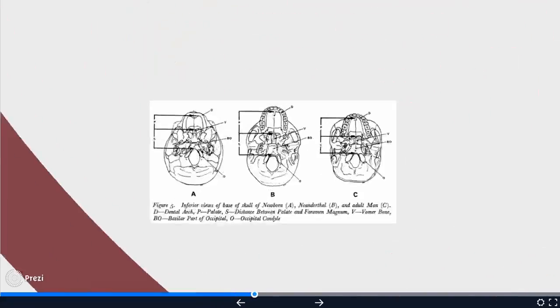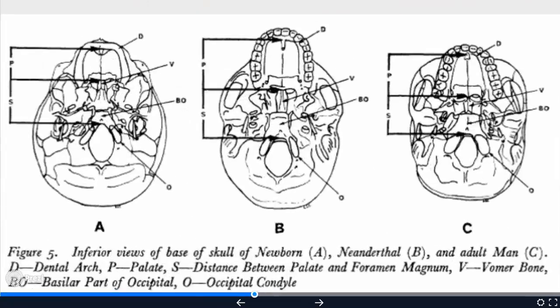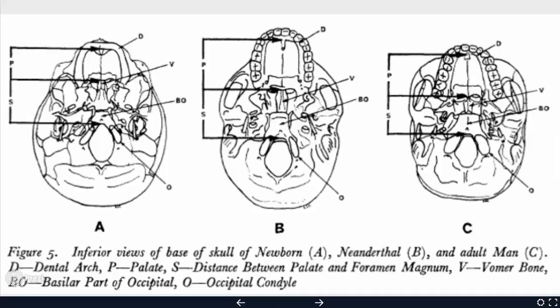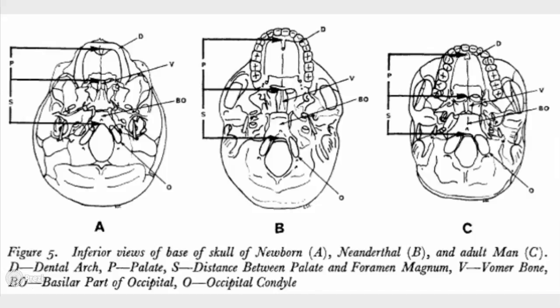We're going to start with the palate size. The palate sizes can be seen here. For the newborn palate, the length is less than the width — it's about 2.1 to 2.6 centimeters across, roughly. The Neanderthal palate is about equal in length and width, with a determined average of about 6.2. In adult man, the length is longer than the width, at about 5.1 and 4.1 respectively. This is important because it shows the shape of the mouth.